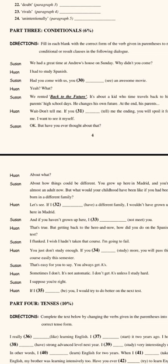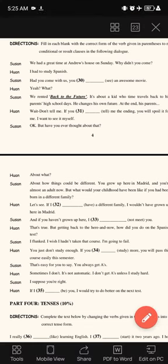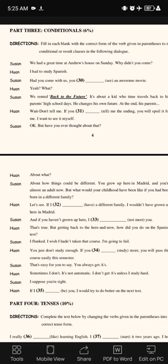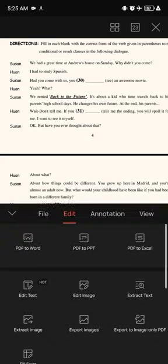According to the conditional sentence, we can conclude what goes in the blank space. This is a conditional sentence type three. We can say: 'Had you come with us, you would have seen an awesome movie.' The blank is filled with 'would have seen.'